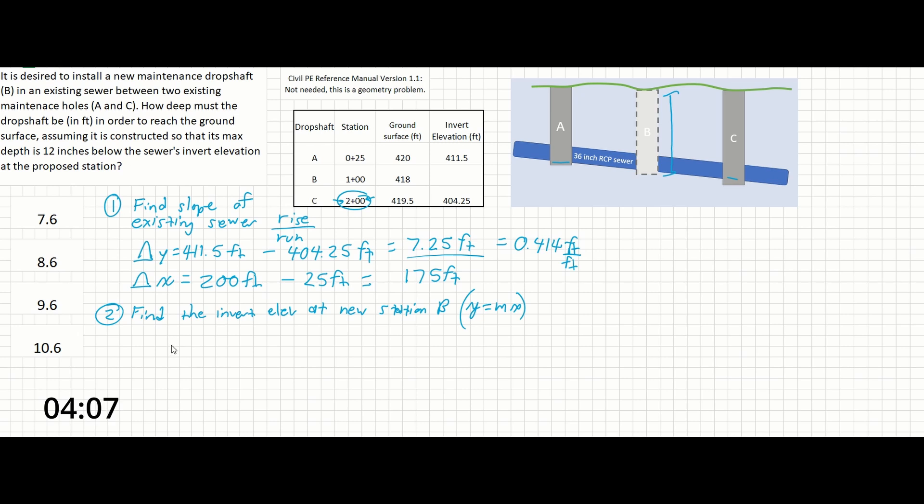So we can say that the distance between B to A is going to be the difference between these two stations. So again, 1 plus 00 is going to be equal to 100 feet, and 0 plus 25 is going to be equal to 25 feet.